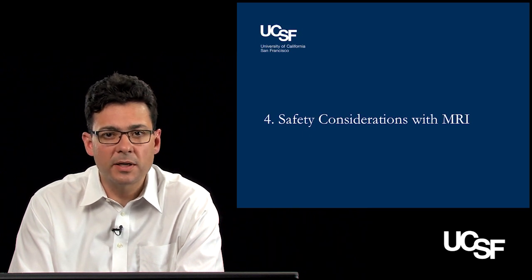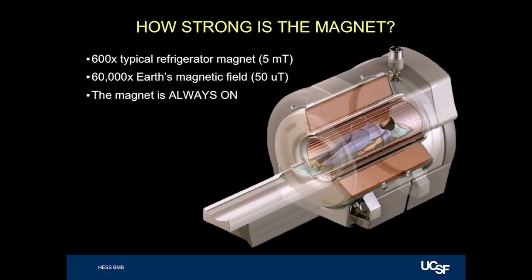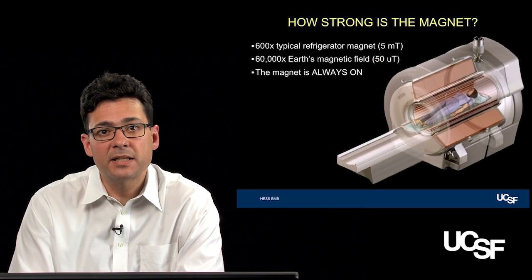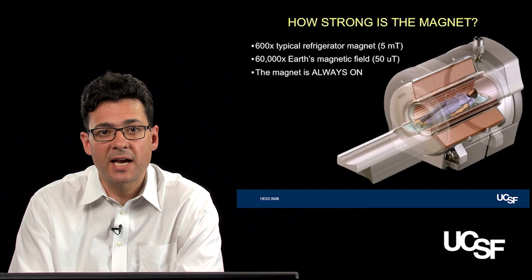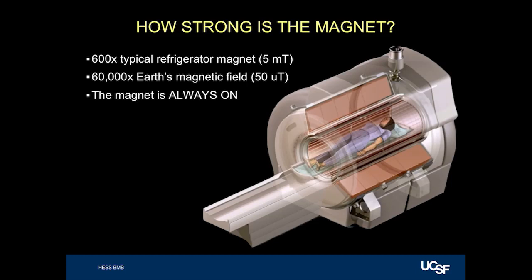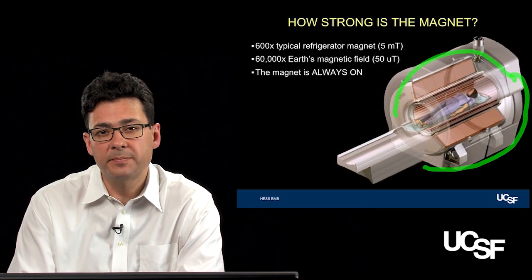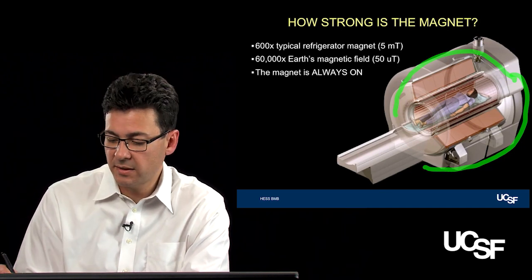Let's end by talking about safety considerations with MRI — a fun topic because you're talking about a giant magnet. How strong is this magnet? 600 times as strong as a typical refrigerator magnet for a 1.5 tesla scanner; for a 3 tesla scanner, it's twice that, or 1,200 times a refrigerator magnet. It's about 60,000 times the Earth's magnetic field, and importantly, you can't turn this off — the superconductor inside is always on, whether or not a patient is in the scanner.